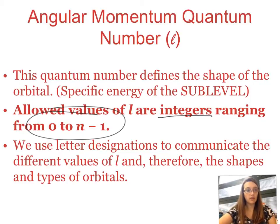So we actually use letter designations to communicate these different values of l, because those are the different sublevels. So you can have your s, your p, your d, your f, and so on. And that's much easier for us to distinguish than the shapes of orbitals.